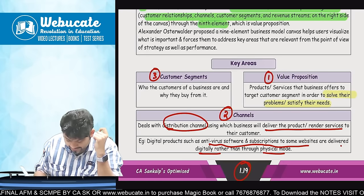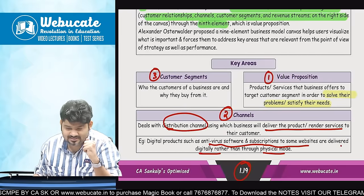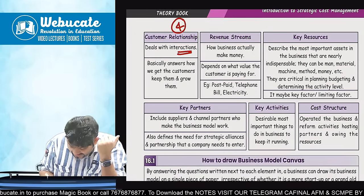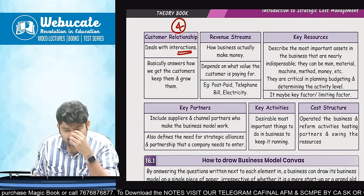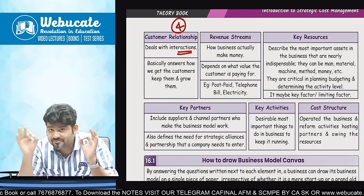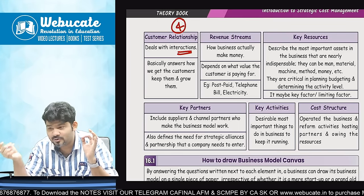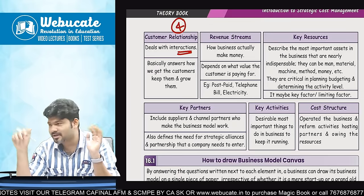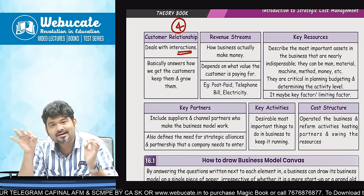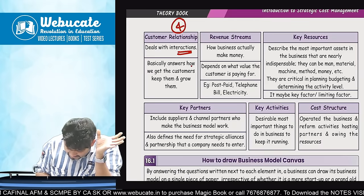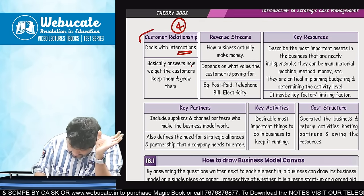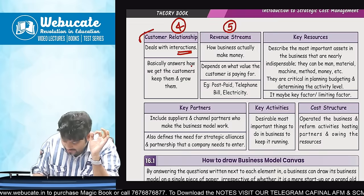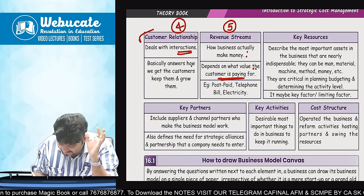Third is customer segment — isko mein bolti hoon target group. Who the customers of a business are and why they buy from it. Ab toh inka customer base kaafi bada ho gaya hai. Customer relationship — deals with the interactions. Jaisa meinne bola birthday pe, ya in general Zomato ka aap logon ke paas agar app hoga toh every two hours mein kuch na kuch aate rahega. Jaise world cup hai toh world cup ke liye woh dalega kuch na kuch — 'Have you ordered for the pizza as India is winning?' Ya raksha bandhan aayega, ya Diwali — Zomato will connect to the customer. Customer relationship basically answers: how we get customers, keep them and grow them. Next, revenue streams — kaise paisa earn karna hai — how business makes money, depends on what value the customer is paying for. Phir baad mein aa jaata hai cost structure — business ko operate karne ke liye jo bhi cost lagta hai, all of that is a part of cost structure.